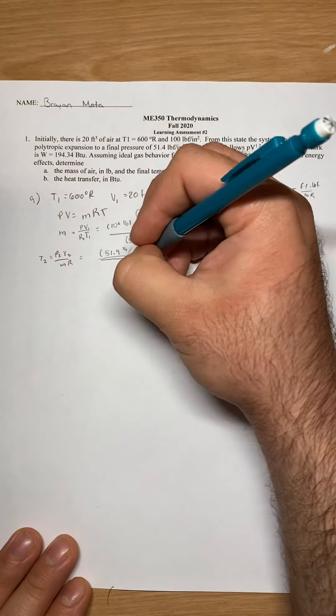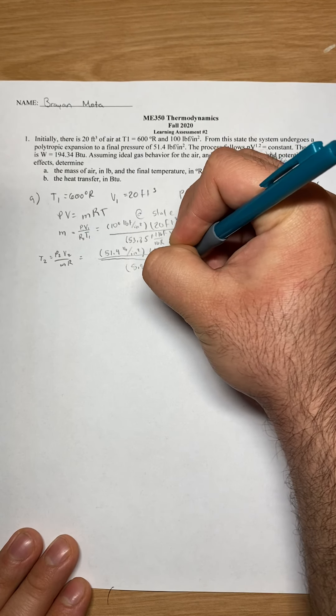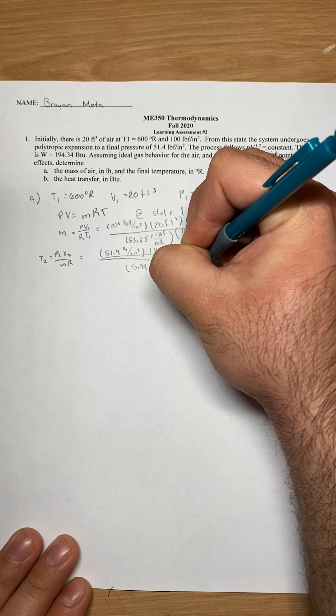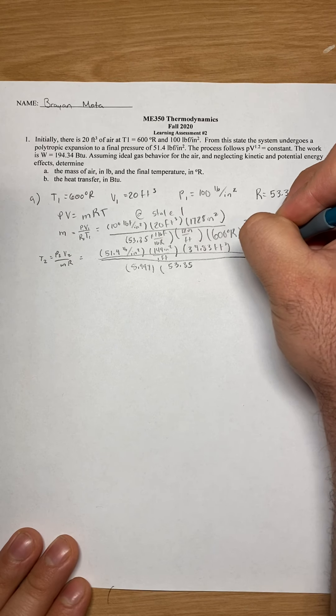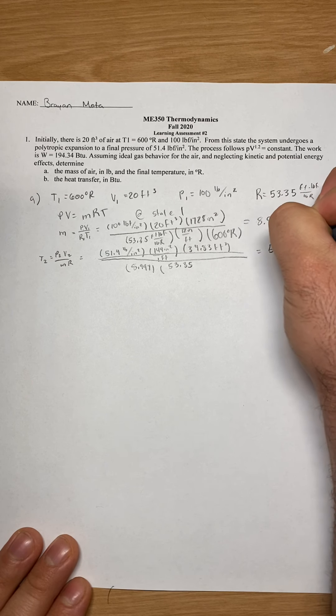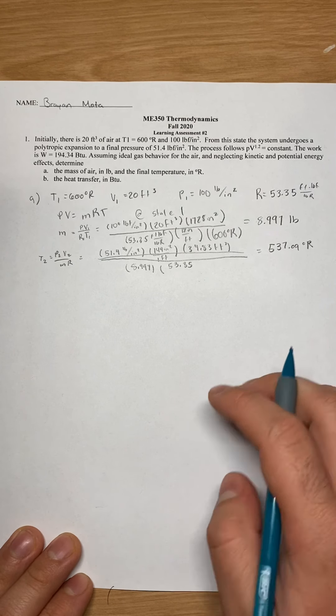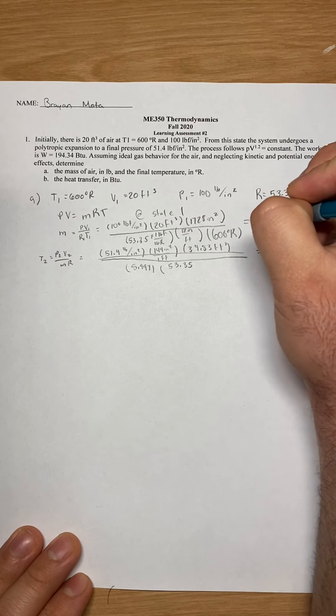And our mass, so it's 8.997, and then our R, 53.35. We plug that in and we get a value of 537.09 in Rankins. And that is our final temperature and our mass. So temp, mass. For part B...